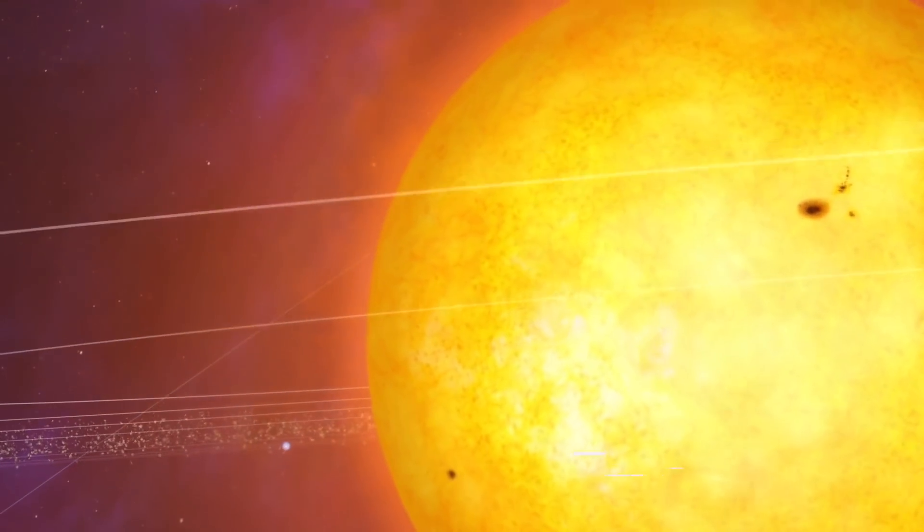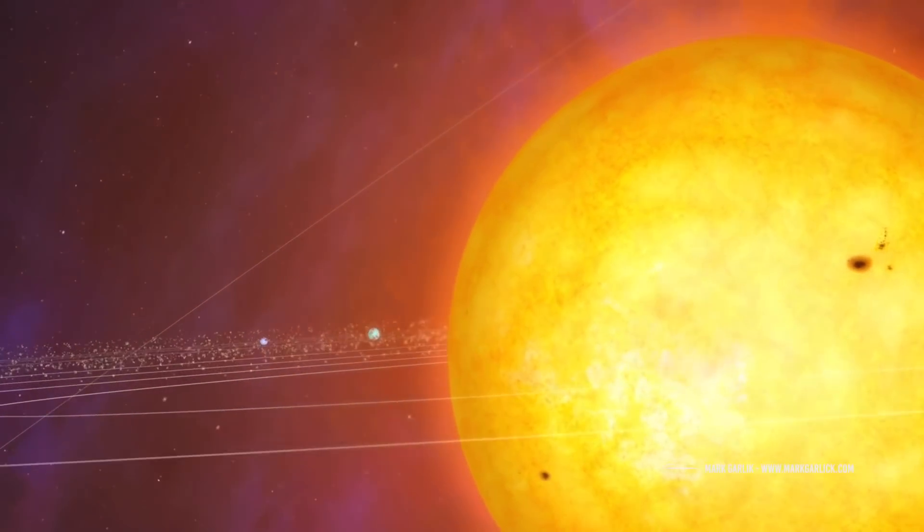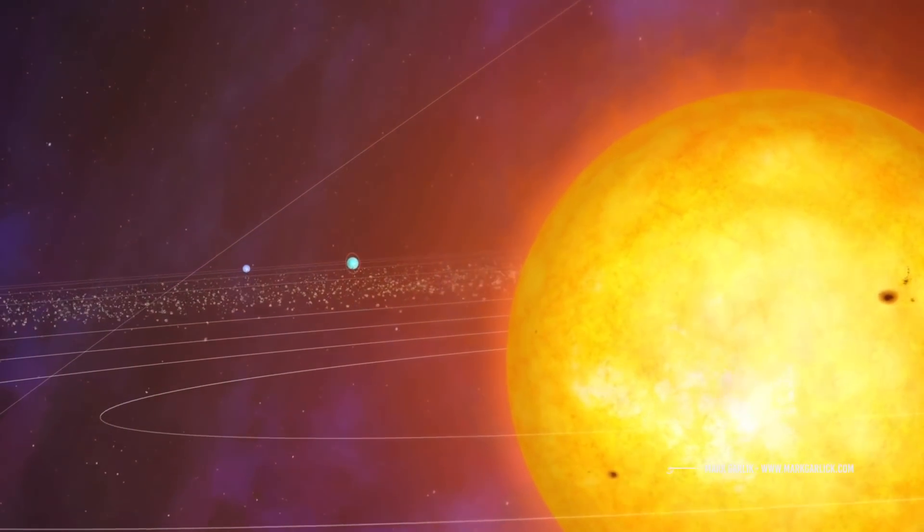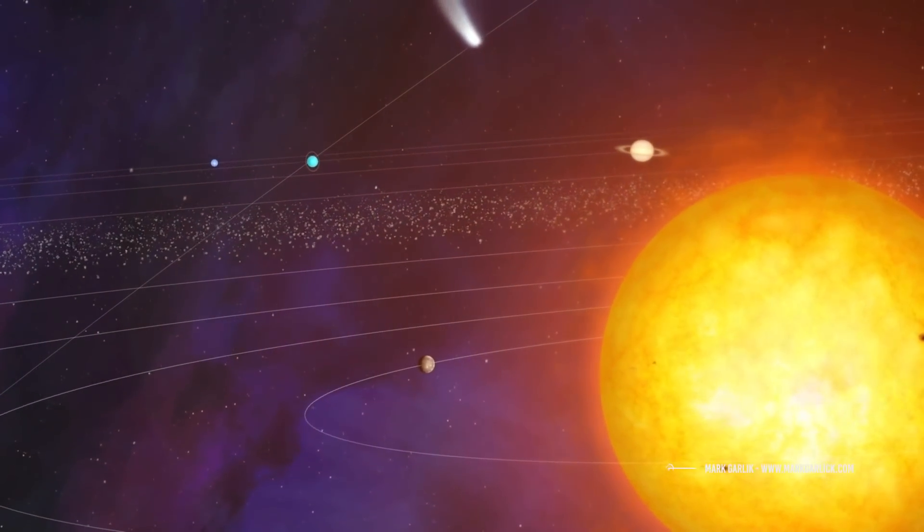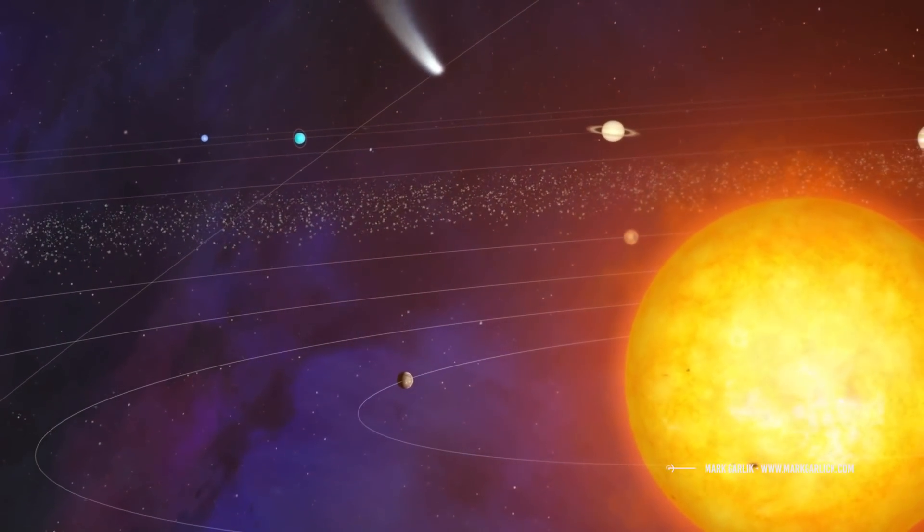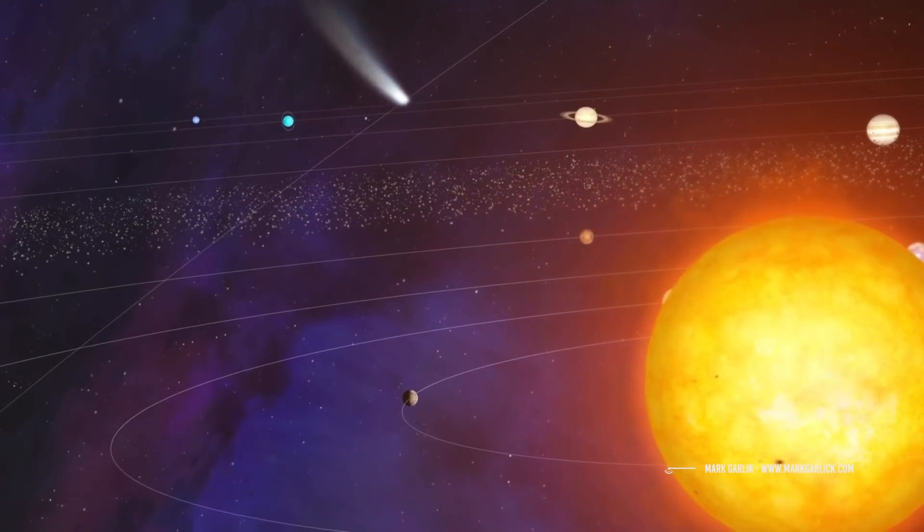But what will be the solar system's fate, according to this scenario? Well, predictions say that the solar system will be swept out three times farther from the galactic core than its current distance. They also predict a 12% chance that the solar system will be ejected from the new galaxy sometime during the collision.